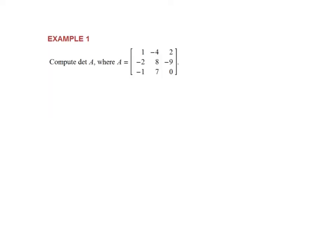Let's use that theorem in this first example, where we're given a matrix A and we'll do a couple of row operations and compute the determinant. The matrix is 1, -2, 1 / -4, 8, 7 / 2, -9, 0. First, I'll do a row replacement: double row 1 and add row 2, giving 1, -4, 2, 0. If I double row 1 and add row 2, I get another 0. Double row 1 gives 4; minus 9 is 5. There's my first row replacement.